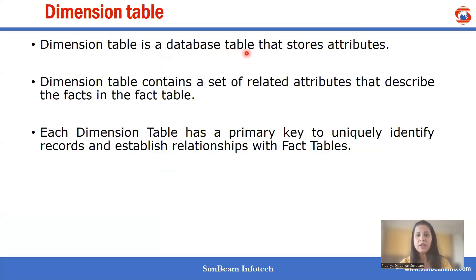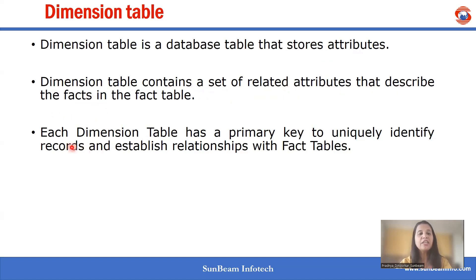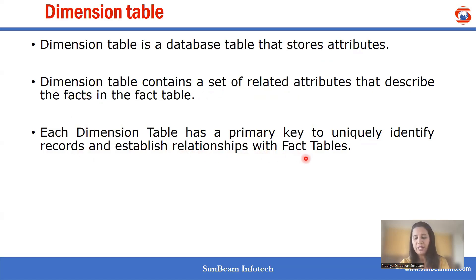A dimension table is a database table that stores attributes. It contains a set of related attributes that describe the facts in a fact table. Each dimension table has a primary key to uniquely identify a record and establish a relationship with the fact table.